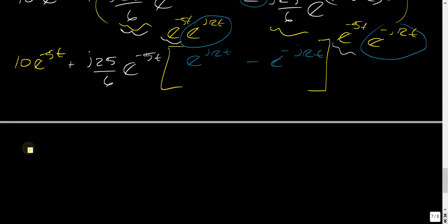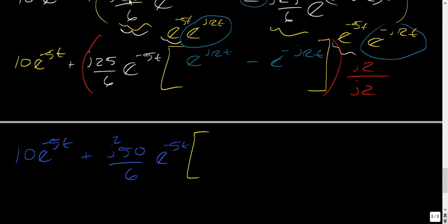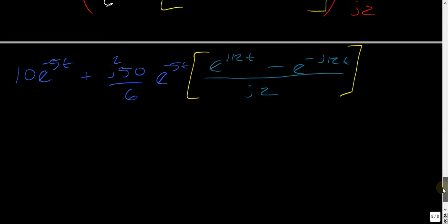And the J2 is going to come by multiplying top and bottom by J2. So if I multiply this whole equation by, multiply the whole equation by J2 over J2, not the entire equation, just this multiplication portion, we get 10E to the minus 5T plus J2 times 25 over 6 E to the negative 5T. Now, what we're left with in this bracket here is E to the J12T minus E to the minus J12T all over J2. And lo and behold, we can convert this to sine.